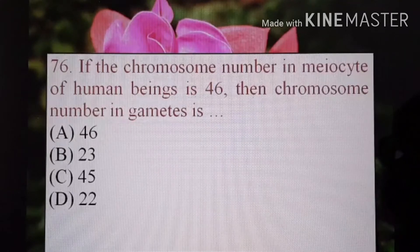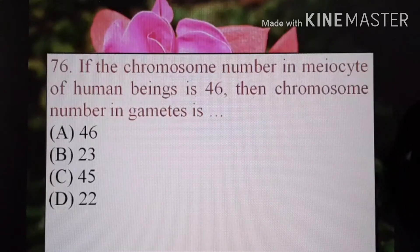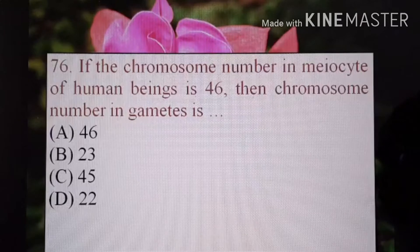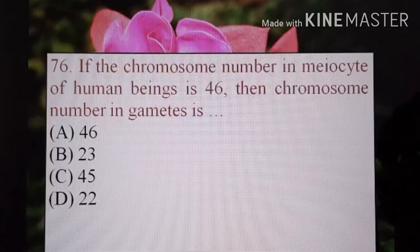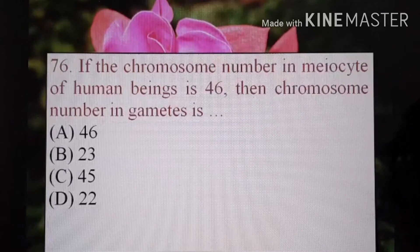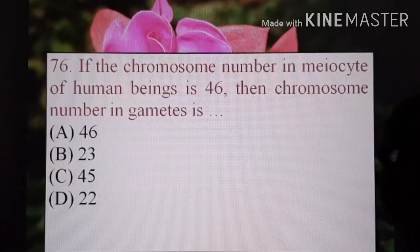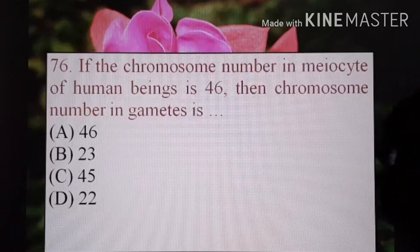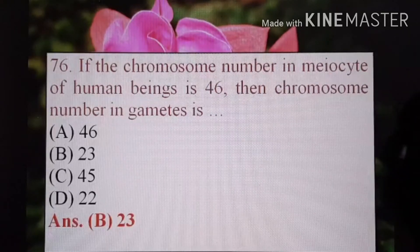Friends, if you are following me regularly, in my previous video I explained what meiocytes and gametes are. Meiocytes are the mother cells of gametes. From meiocyte cells, gametes are produced through the process of meiosis. Meiocyte cells are diploid and gamete cells are haploid. This means meiocyte cells have double the number of chromosomes present in gamete cells, or vice versa, gametes have half the number. Here, the meiocyte chromosome number in human beings is 46, so gametes will have 46 divided by 2. The correct option is B) 23.